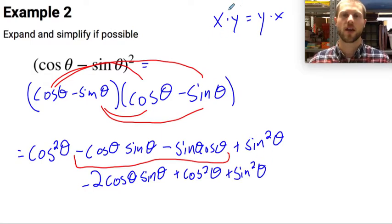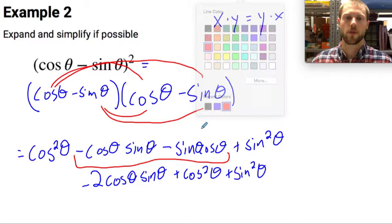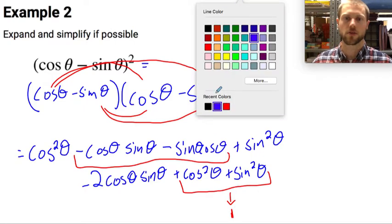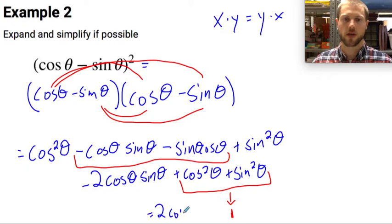Now hold on a second. I think I see an identity. Yes, I do. Cosine squared of theta plus sine squared of theta equals 1. So that means that all of this is equal to negative 2 cosine of theta sine of theta plus 1. And there you have it.